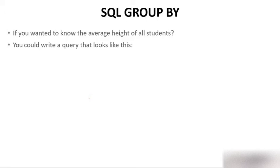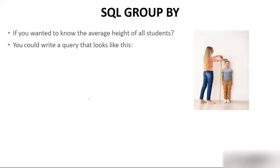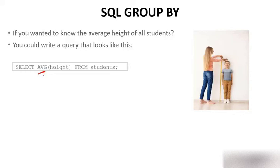If you wanted to know the average height of all students — imagine a teacher taking the height of all students — you could write a query like: SELECT AVG(height) FROM student. Here AVG is an aggregate function, and we have a separate video for aggregate functions. What is happening is we are selecting the average height from the student table, where height is a column. Finally you will get the average height. Suppose the student table has 60 students — you will get the average height of those 60 students.